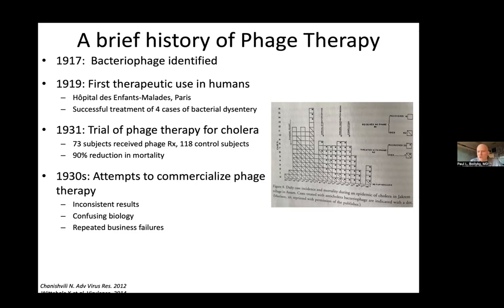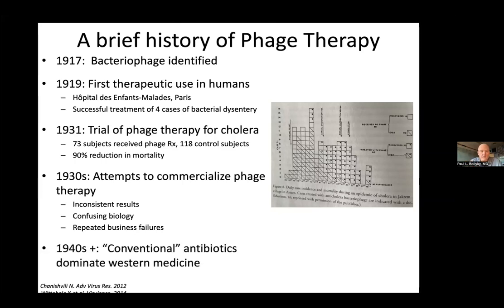D'Herelle tried to commercialize this and turn it into genuine therapies, but the results were inconsistent. They didn't have very good methods of culturing bacteria, and they couldn't even visualize or understand what the organism was that they were dealing with — it wasn't until later that it became clear it was a virus. The biology of phages is complicated, and this contributed to a number of business failures by D'Herelle and others. But what really did phage therapy in was the competition from pharmaceutical antibiotics. Around the same time, the first antibiotics came about primarily through the German dye industry, and then things like penicillin. These were much easier to manufacture and a lot more reliable, and so for over 50 years, the world forgot about phage therapy.